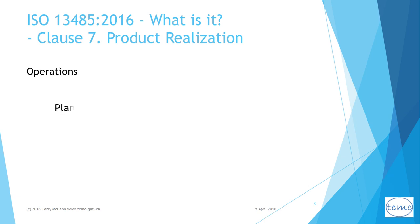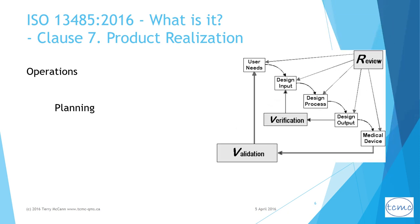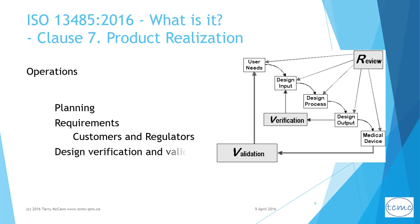Clause 7 contains a very large set of requirements covering the whole of operations, starting with planning and developing the processes needed for product realization. You have to set product quality objectives, identify product realization requirements, and establish arrangements for communicating with customers and medical device regulators. You also have to establish design and development procedures and organize design and development activities. Effective verification and validation is a very important requirement at this stage, prior to design transfer to manufacturing.